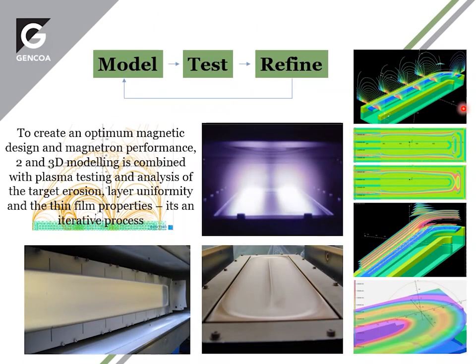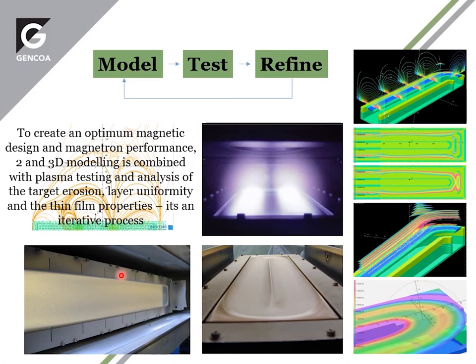A universal approach is basically taken in creating any new magnetic system, and that's modeling. Modeling is done in 2D and 3D to create a magnetic design which you measure, analyze, and think might do the right job. Then you test — plasma testing is always required to verify models — and then refine, going back to remodel based on testing results. By doing this cycle you can get an optimum solution.